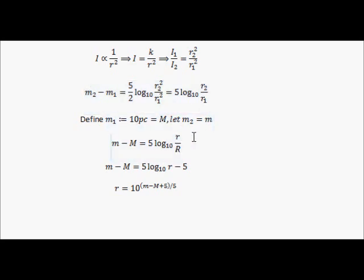So big R is 10 parsecs. Now, provided we measure the distance in parsecs, we can let big R equal 10. So we're using another log rule where we expand the log into a difference. So 5 log 10 r over big R becomes 5 log 10 r minus 5 log big R.